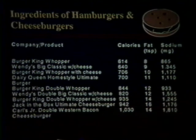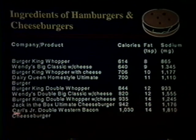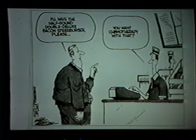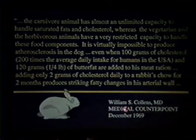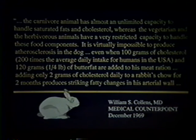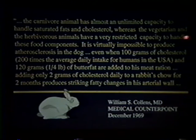If you want a quick grease job, there's no better place than a fast food chain. The current champion is Carl's Jr.'s Double Western Bacon Cheeseburger — the coronary artery bypass special. That single hamburger has over a thousand calories and 14–15 teaspoons of fat. You can get your entire daily sodium value in that one item. As William Collins said: the carnivorous animal has almost unlimited capacity to handle saturated fats and cholesterol, whereas the vegetarian and herbivorous animal has a very restricted capacity to handle these food compounds.